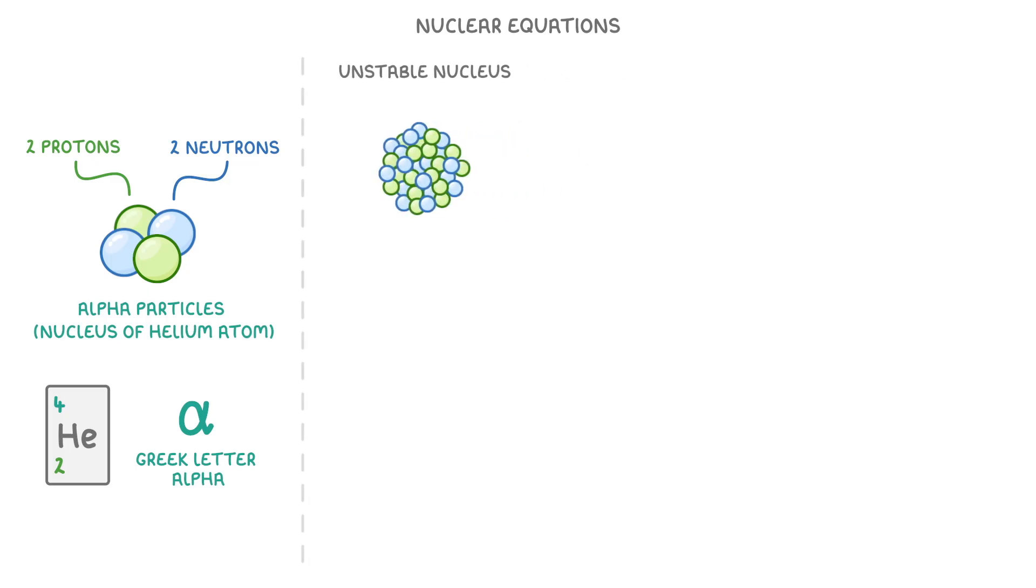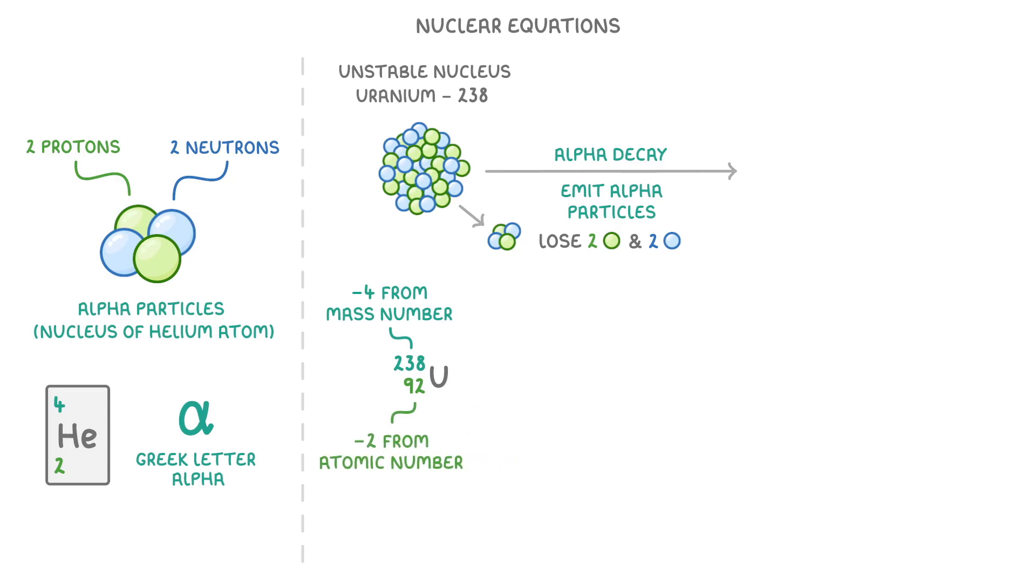So when an unstable nucleus, like uranium-238, undergoes alpha decay and emits one of these alpha particles, it's going to lose two protons and two neutrons. To show this, we have to subtract 4 from its mass number and 2 from its atomic number. So uranium-238 would go to form something with a mass number of 234 and an atomic number of 90.